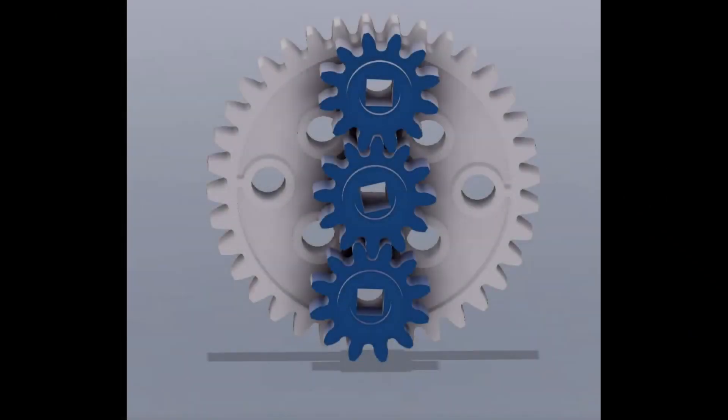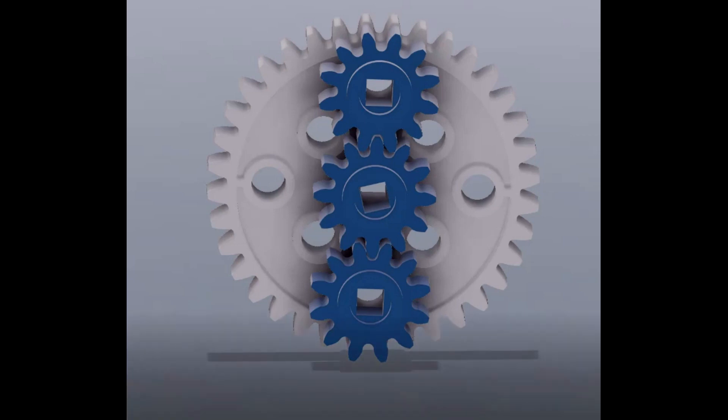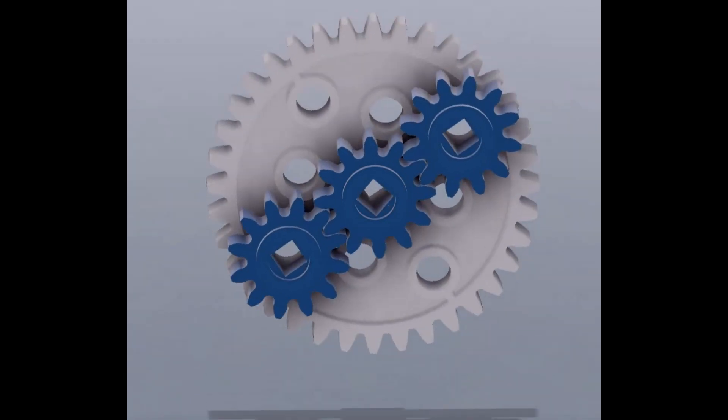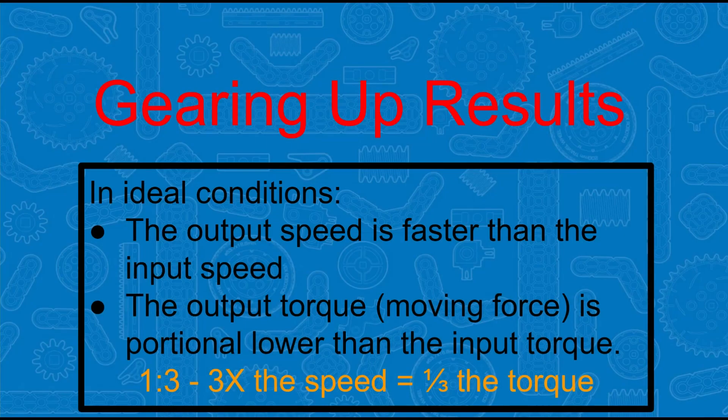However, because the input gear is three times the size of the output gear, it takes three times as much effort to move it, or torque. And this means the output has only one third the amount of torque applied. In summary, when gearing up, the output speed is faster than the input speed, but the output torque is proportionally lower than the input torque. For our example of a 1 to 3 gear ratio, the output of the gear system has three times the speed, but only one third the torque.